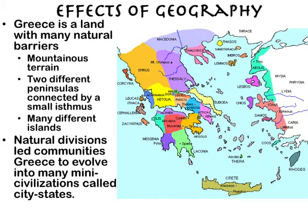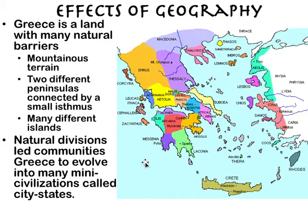Why did these city-states evolve? Well, Greece is a land with many natural barriers. The mountains separate people — it's hard to get past one mountain to another. So if you're on one side of the mountain, you tend to evolve your own way of life, developing your own culture. The two different peninsulas connected by a very small isthmus are a natural barrier, and the fact that Greece is composed of hundreds of different islands — an island surrounded by water — creates many natural barriers.